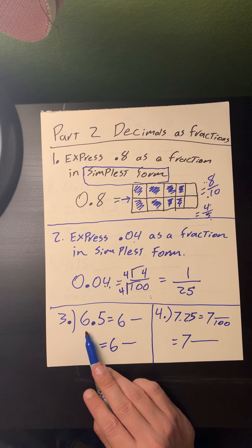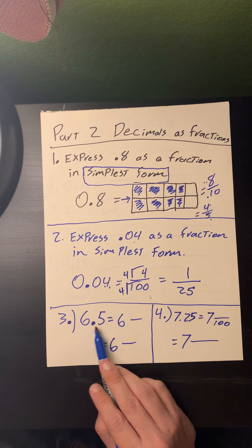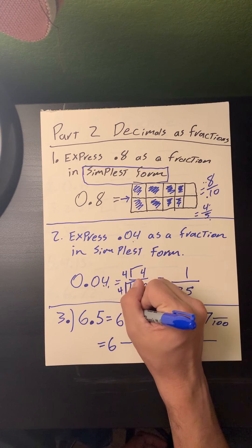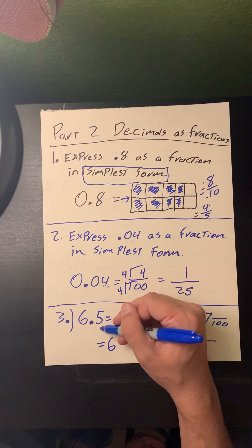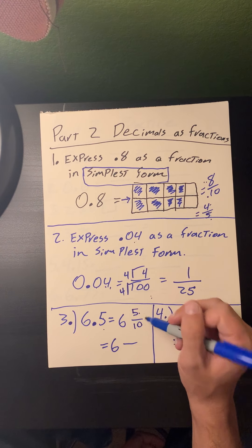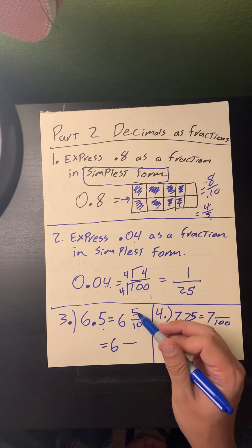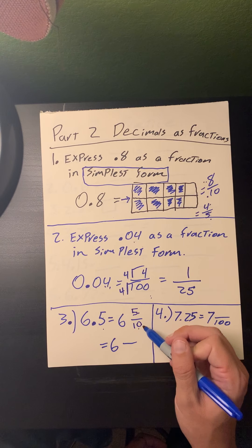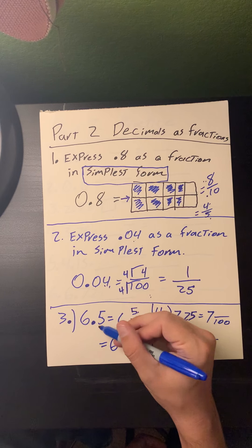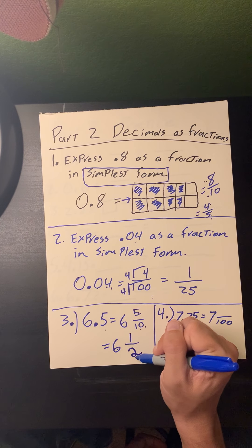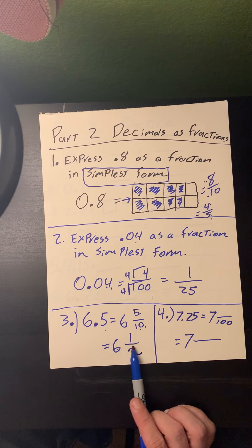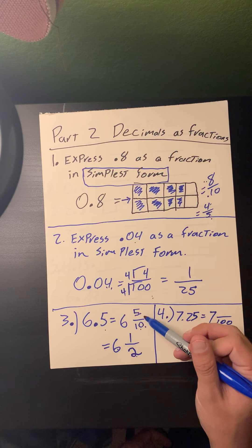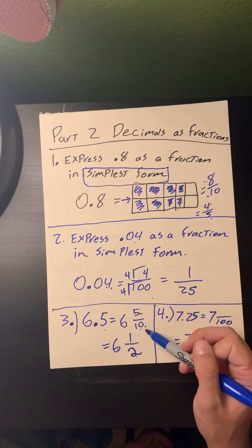Now I'm converting some mixed numbers. The first is 6.5, which equals 6 and 5 tenths — I only have a 5 in the tenths place. I need to convert to simplest form: 5 tenths equals one-half. So 6.5 is equal to 6 and a half. On your packet, it's going to ask you to show the in-between stages — stating that it is five tenths before simplifying.